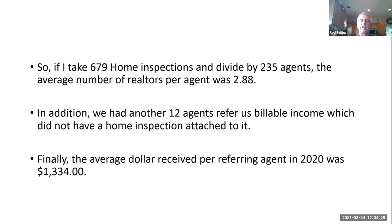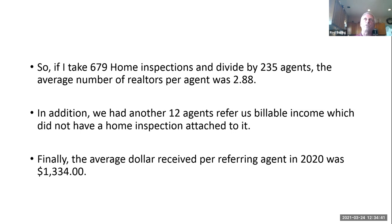Last year we had another 12 agents refer us billable income which did not have a home inspection attached to it — that could have been termite inspections, structural inspections, well and septic, or whatever. It could have been that another home inspector did the home inspection but wasn't certified to do the termite or the well and septic — that's where we came in. The average dollar received per referring agent in 2020 was $1,334. Again, not a lot of money — you need to expand your base.